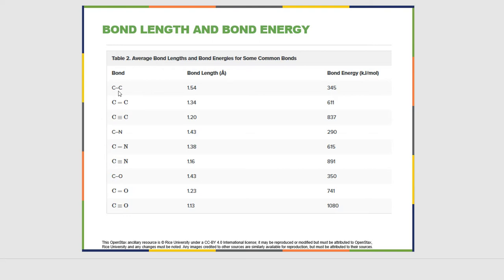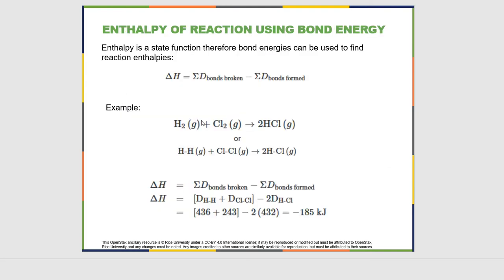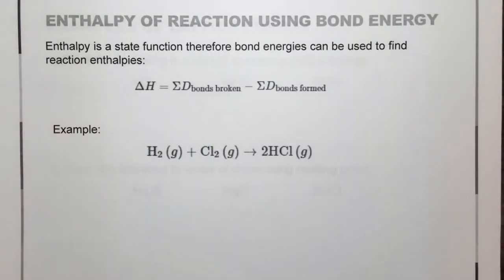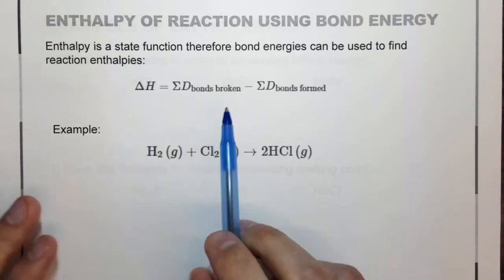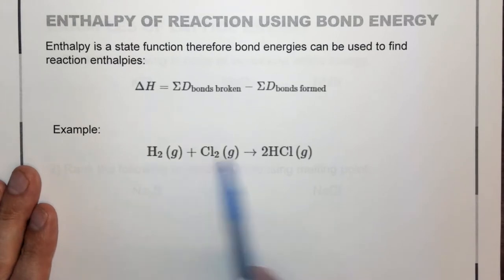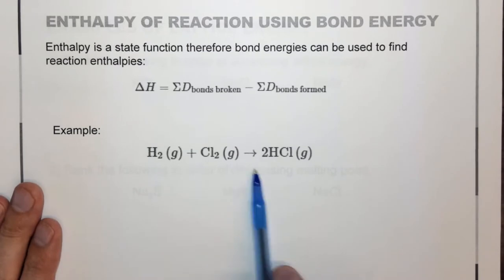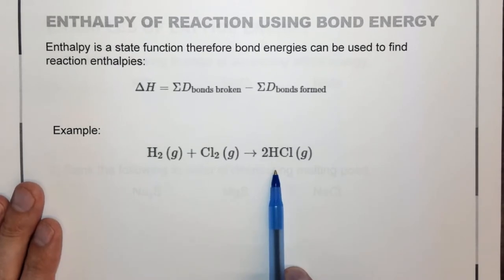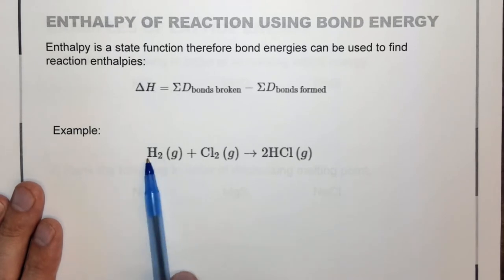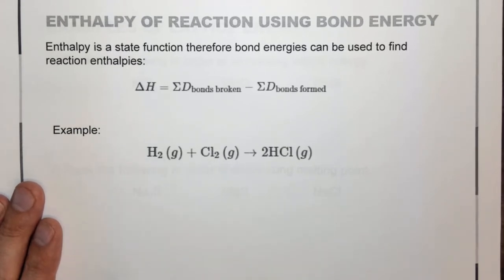It turns out we can actually use these bond energies very similarly to the way we use enthalpy of formation, because we have actual values. Enthalpy is basically the heat energy of a reaction. In this case we're looking at the enthalpy of the reaction for hydrogen plus chlorine yields 2 HCl. So we want to look at what bonds we're going to break and what bonds we're going to form. We're going to break a hydrogen-hydrogen bond, and we're going to break a chlorine-chlorine bond, and we're going to form two chlorine-hydrogen bonds.